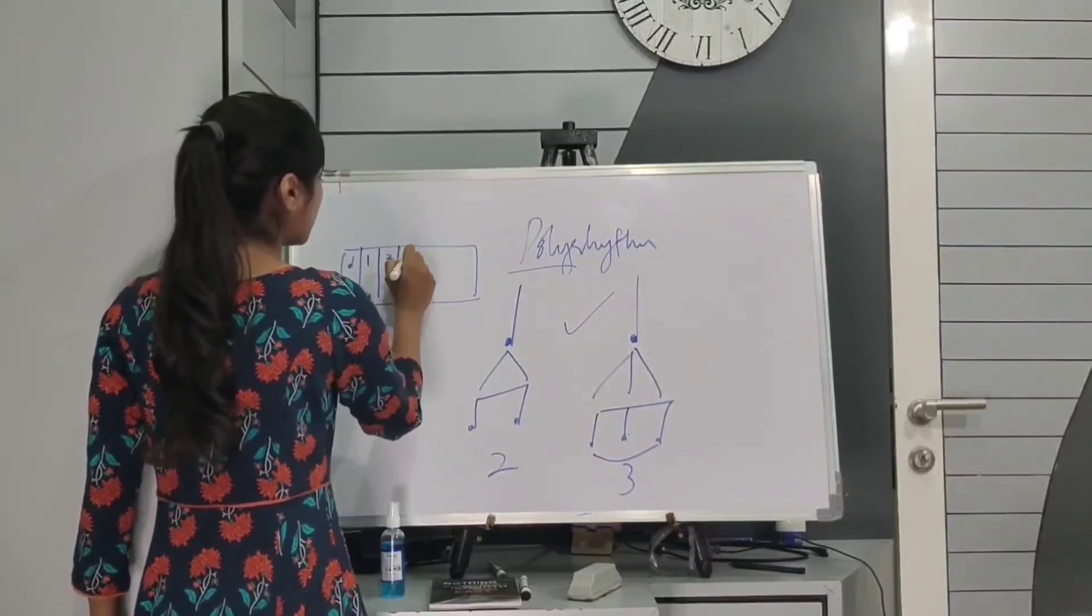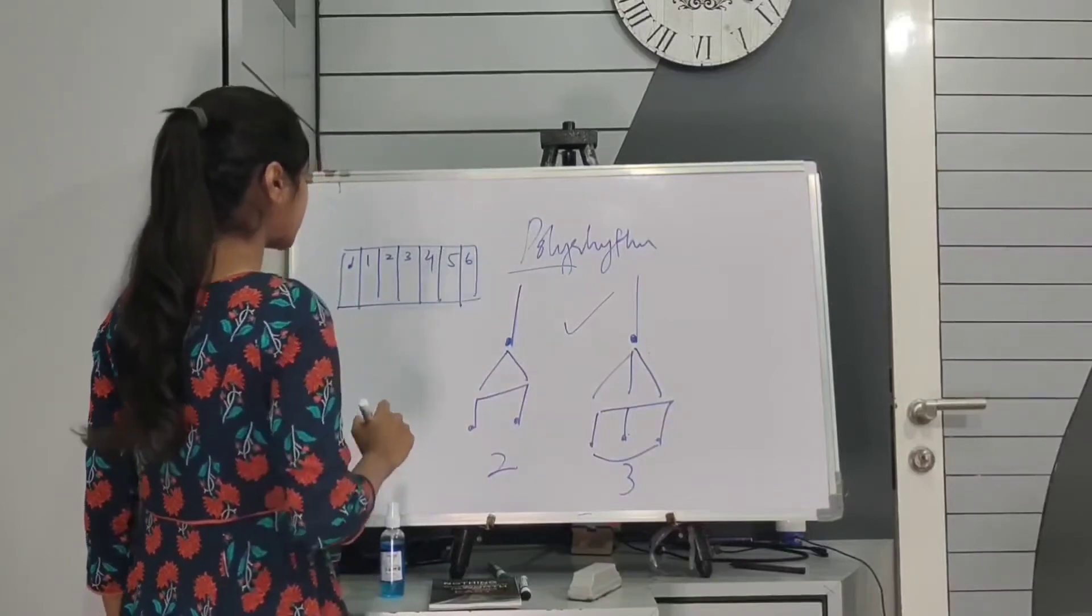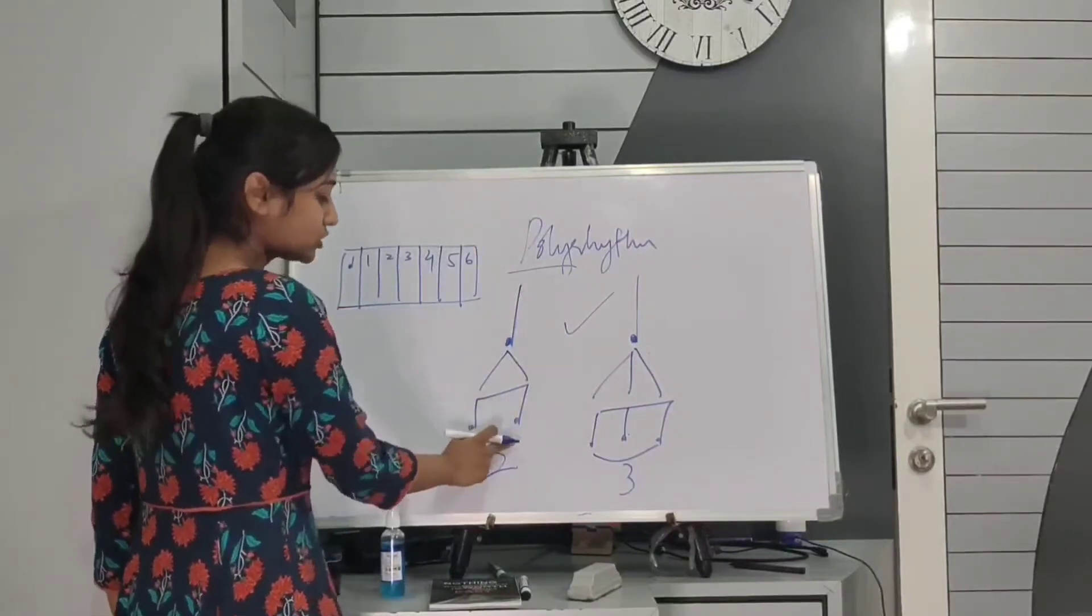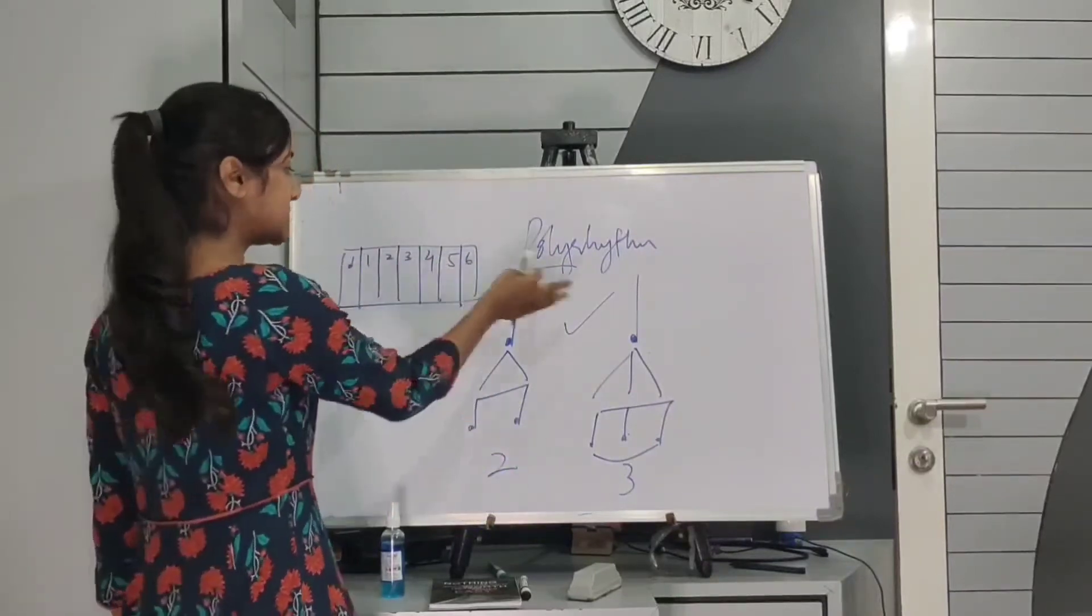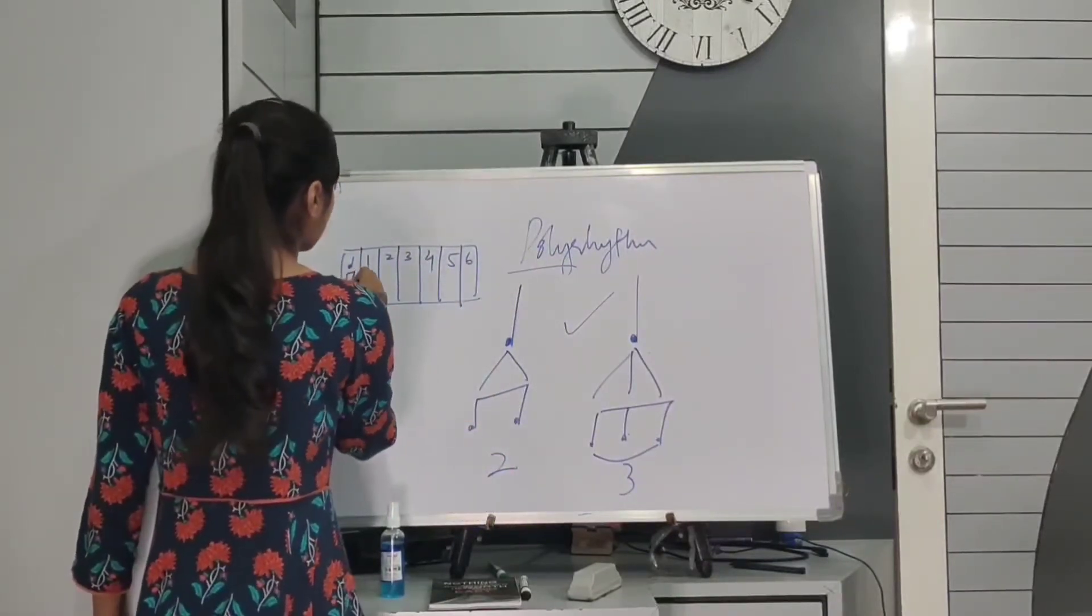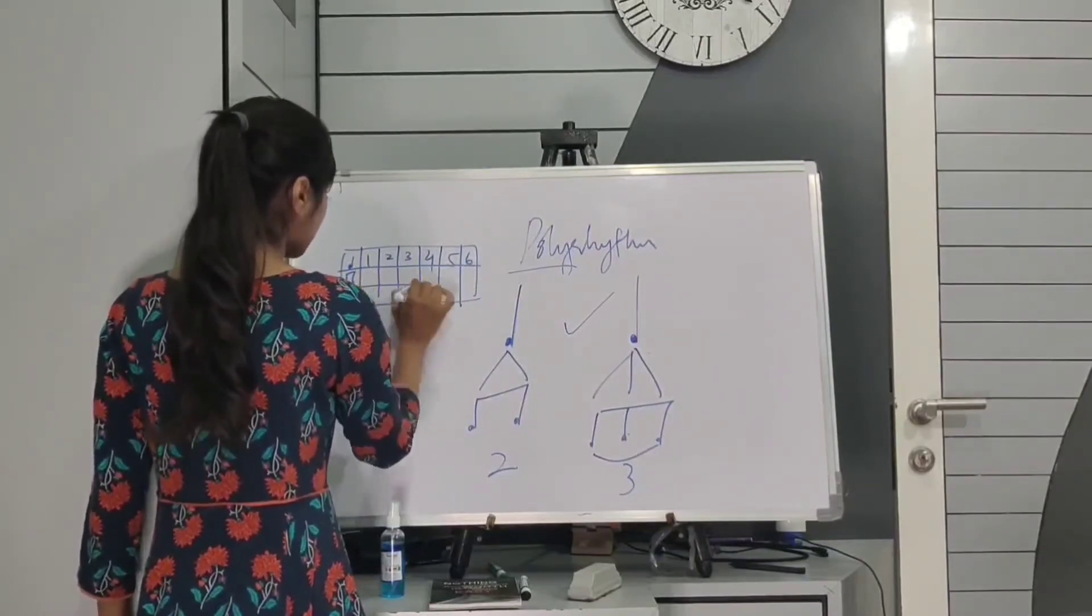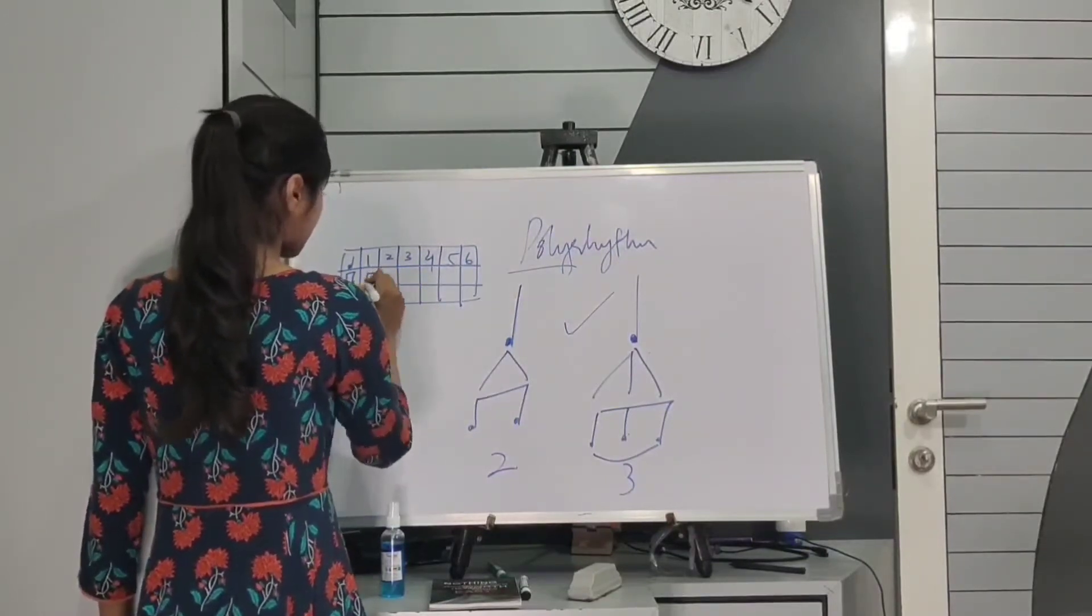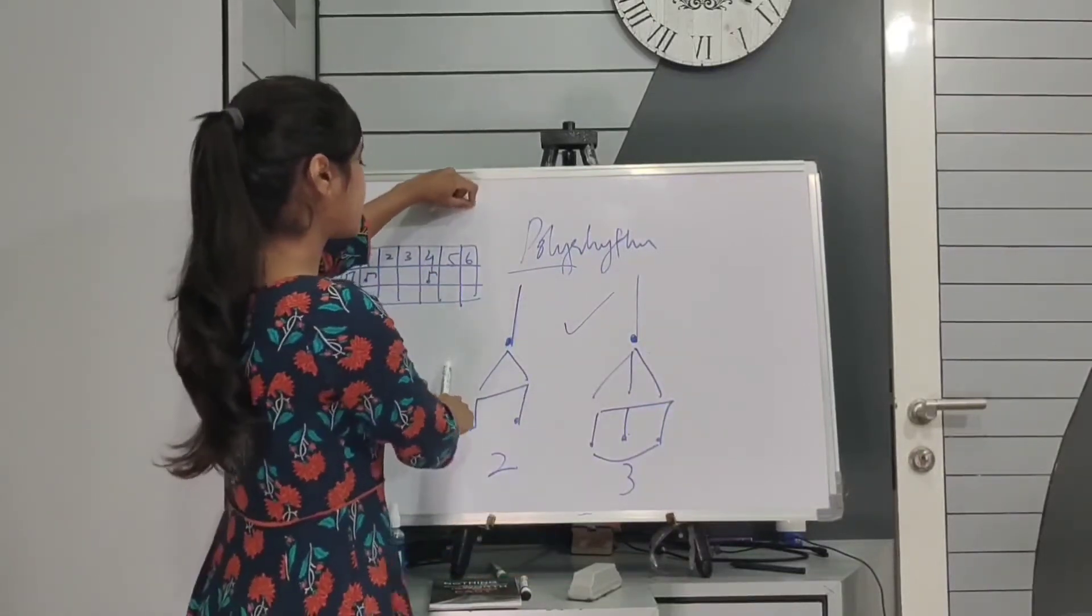Like this. One, two, three, four, five and six. And now I have to distribute the eight notes. That means two notes equally into these six fragments. So one note is going to be on the first beat and second note on the fourth beat. So I have distributed them equally.